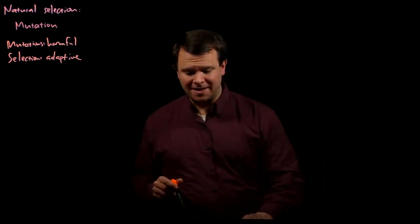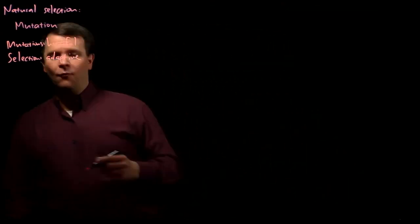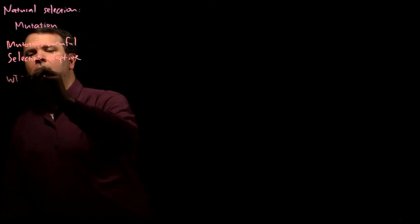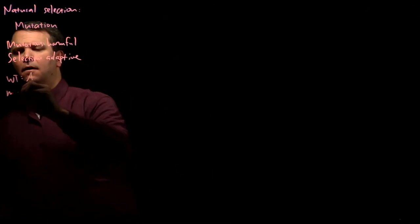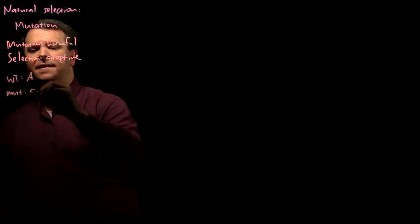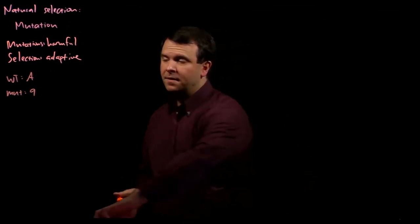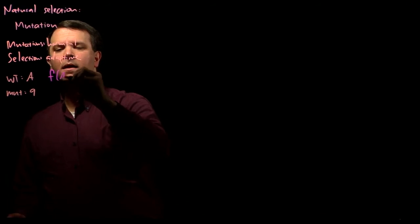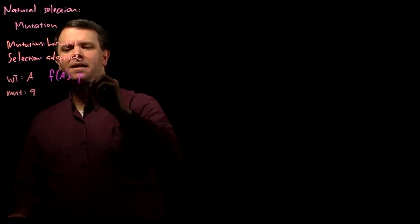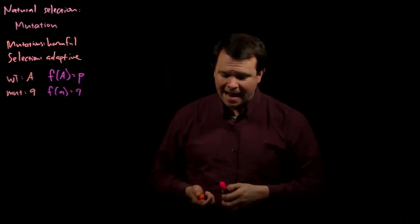Let's have a look quantitatively and see how this works. Our setup involves a wild type, big A allele, and a mutant, harmful, little a allele. Their population-wide frequencies we will continue to write as P and Q, respectively.